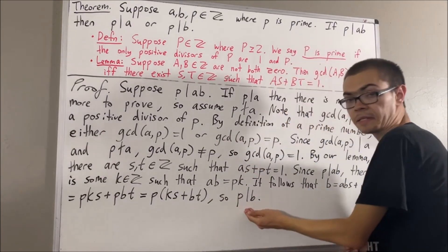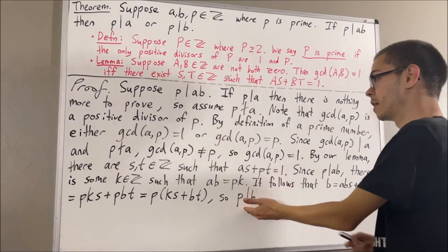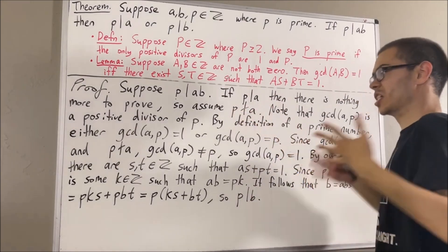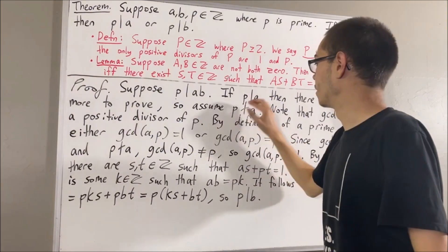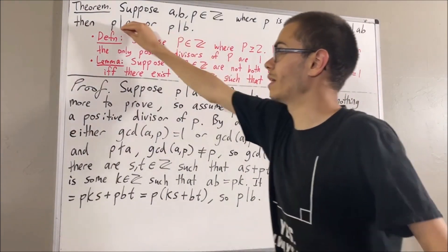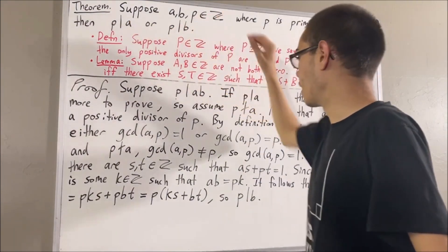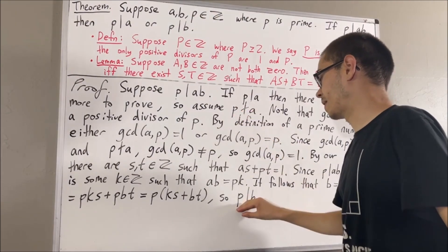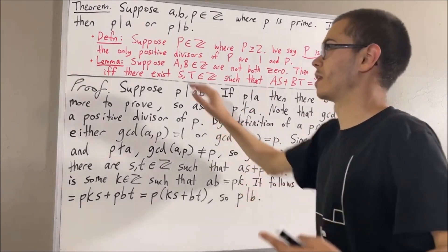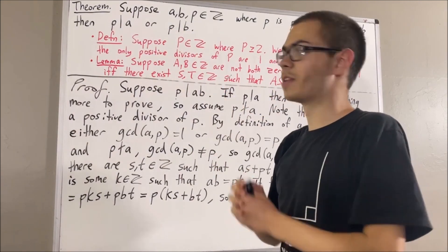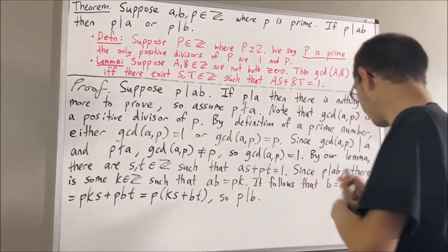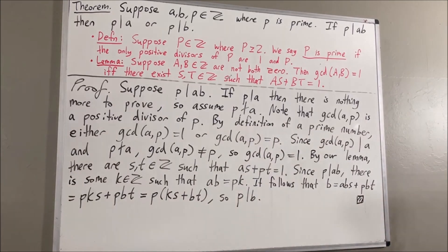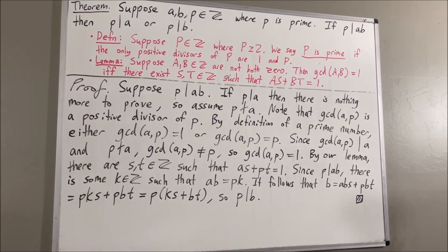That is exactly what we wanted to show in the case where p doesn't divide a. To put this all together: in the case where p divides a, we immediately have that p divides a or p divides b. In the case where p doesn't divide a, we showed that p divides b, so p divides a or p divides b. This completes the proof. And that's pretty much it for this video.